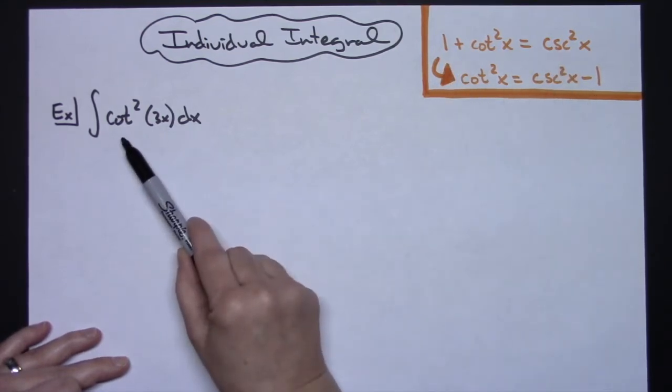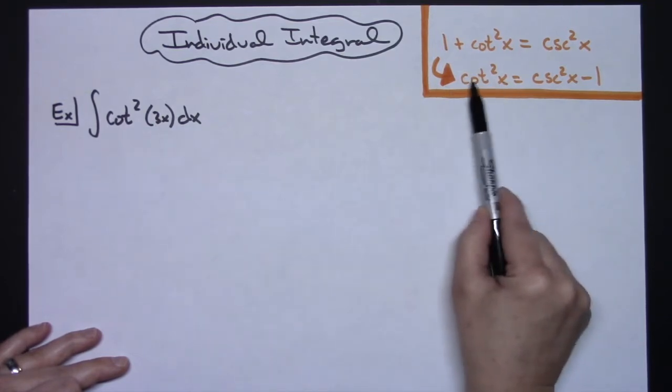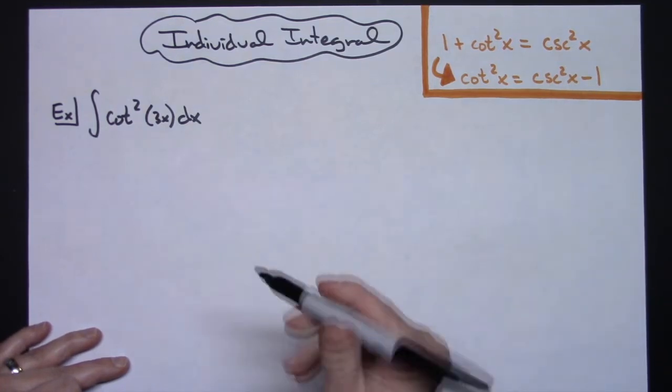We're going to subtract 1 from both sides because as you can see in this integral I've got the cotangent squared of 3x. So we're going to want to make a trig substitution before we start this integral.